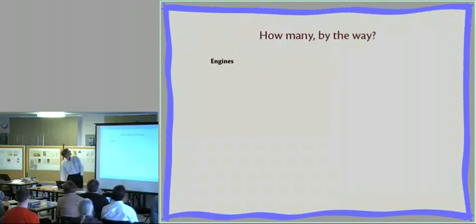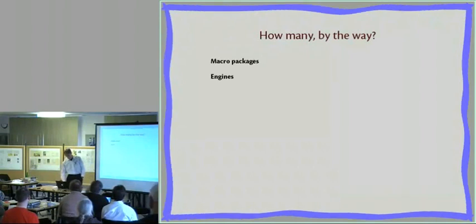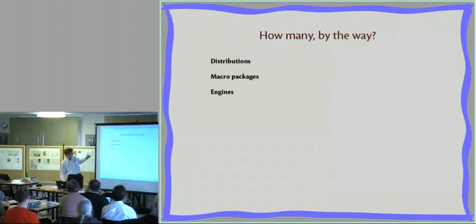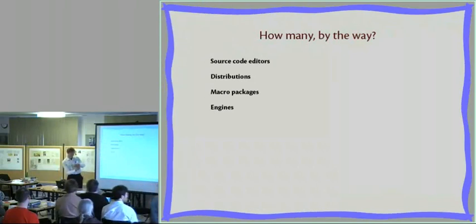Why so many, and by the way, how many? Because we have different levels: we have engines, after that we have macro packages, and still above that we have distributions that distribute all of this. And finally, Jonathan's talk was a good illustration—we have what I call source code editors, intelligent or pseudo-intelligent editors that allow us to edit TeX inputs. So we have to look at least at four different levels.